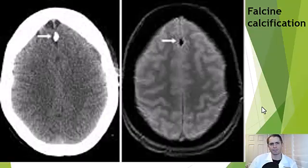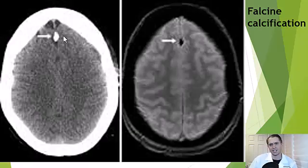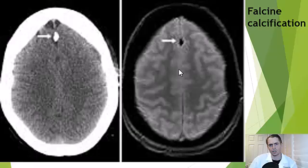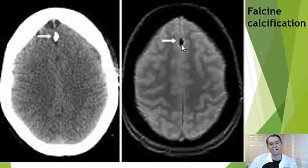On the left is actually a CAT scan, and on the right is a gradient echo sequence of the MRI scan. Both show that the falx cerebri — the normal fibrous structure between the two cerebral hemispheres — has some calcium. This is a common incidental finding; it is not a calcified meningioma.